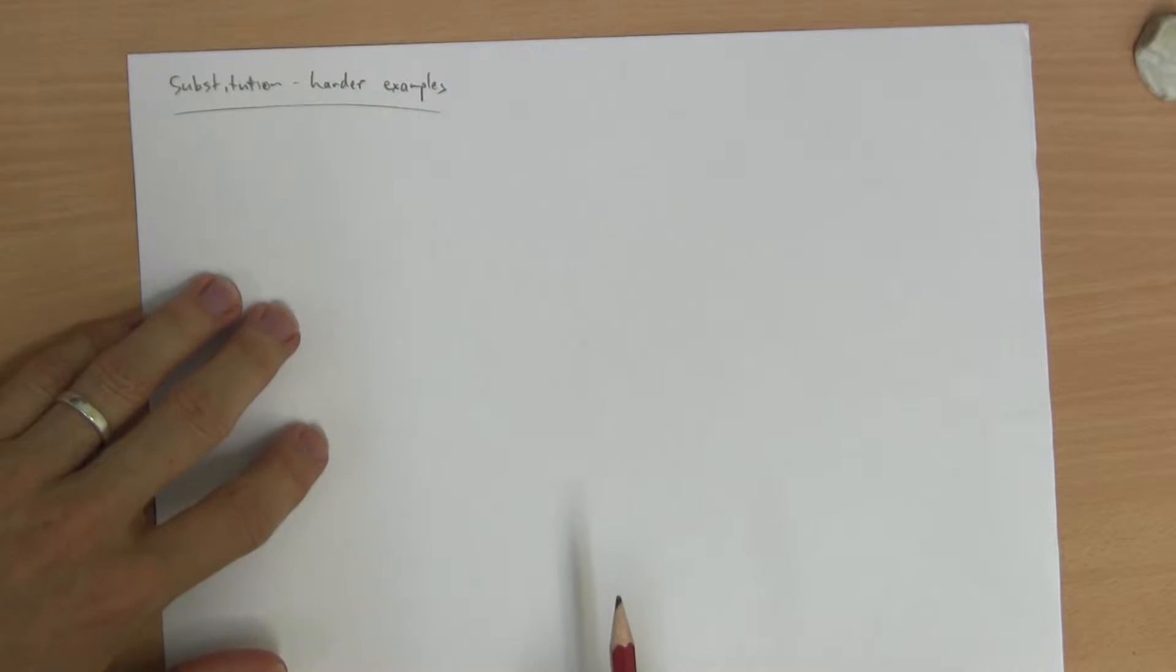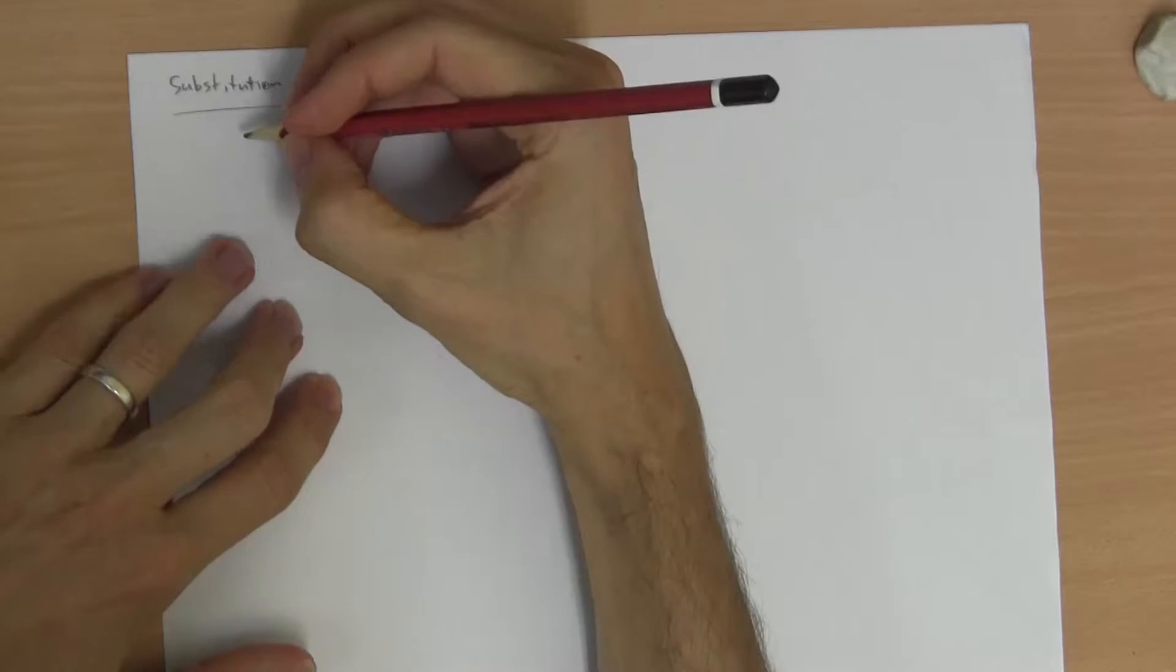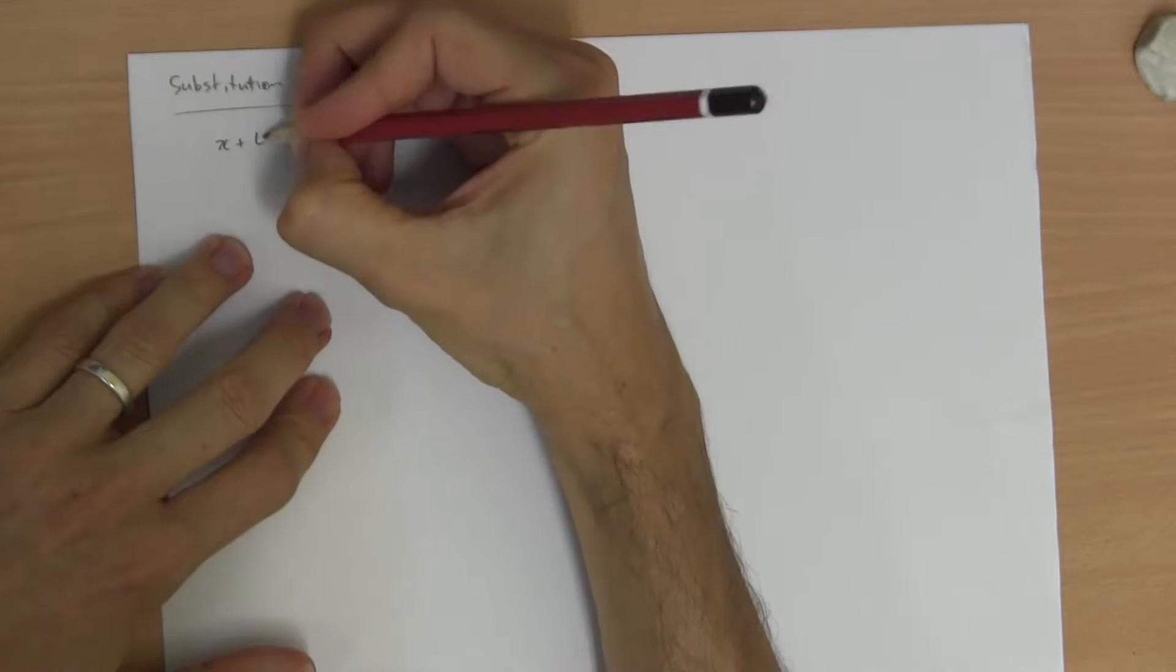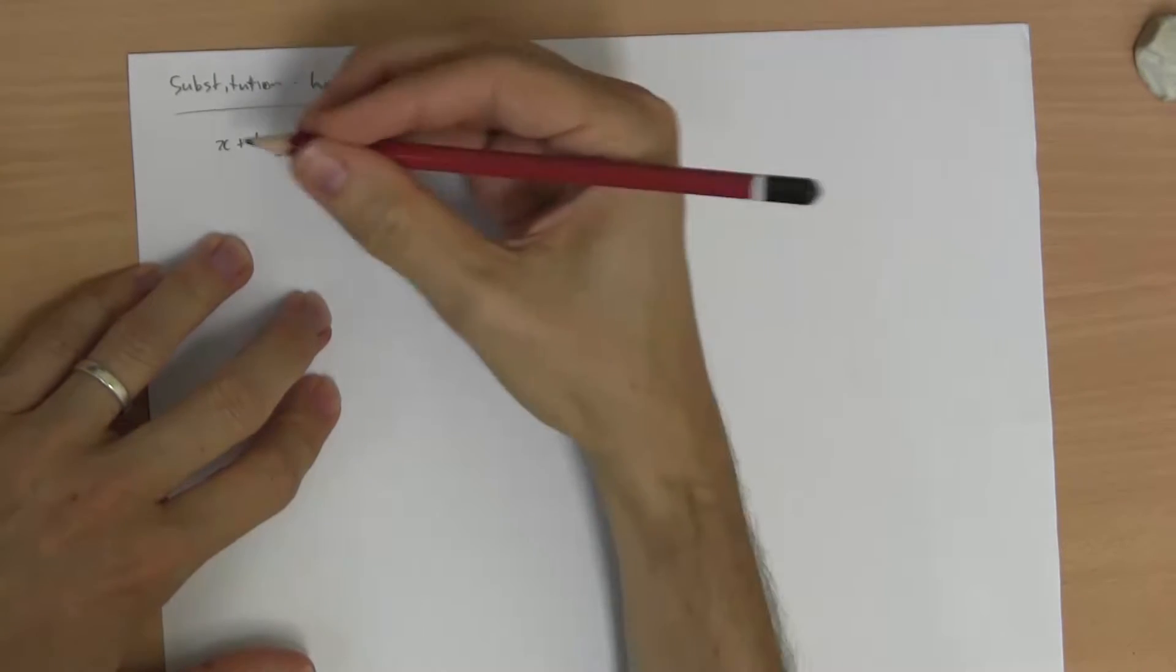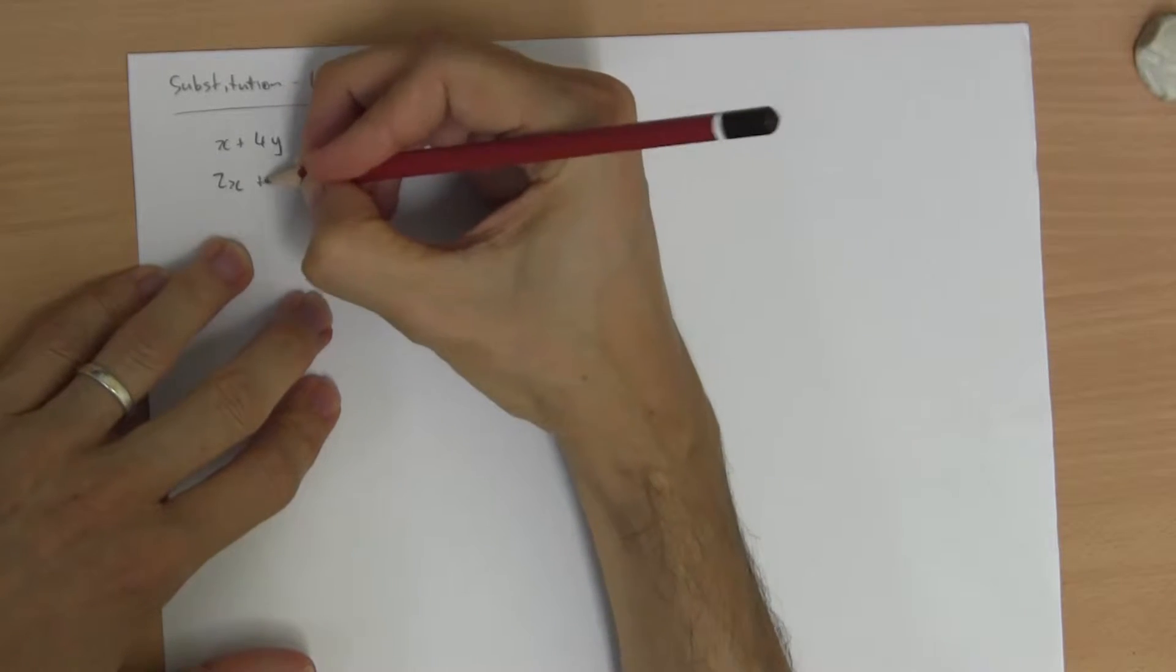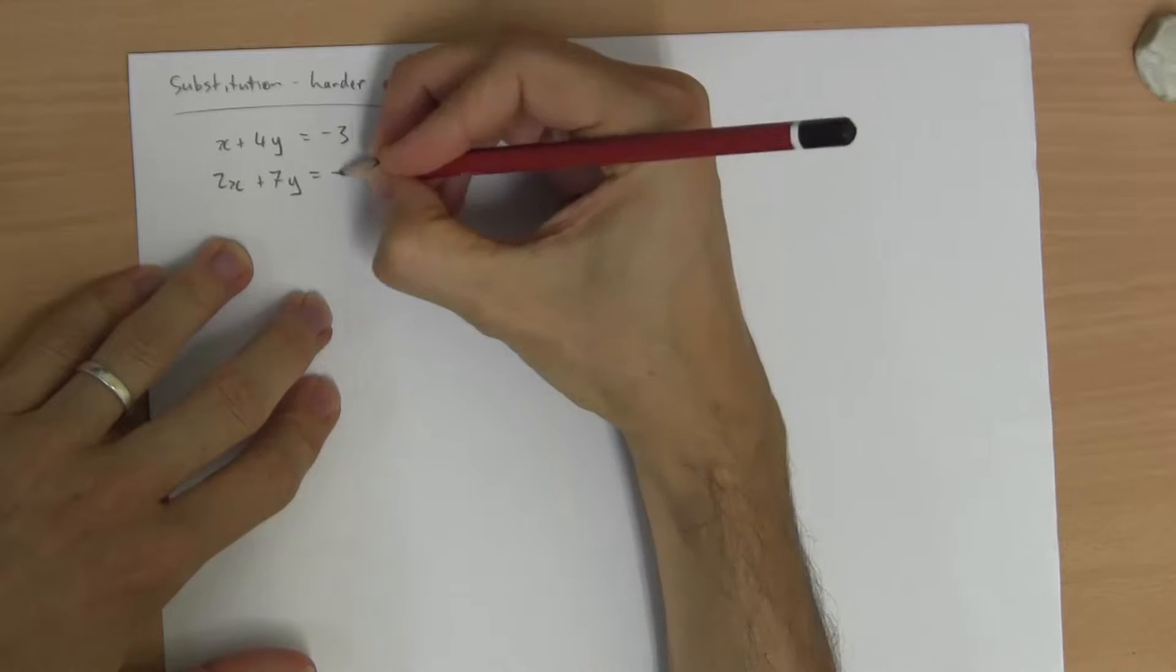So I want to show you a couple of harder examples of substitution. Let's start with this one. x plus 4y equals negative 3 and 2x plus 7y is negative 4.